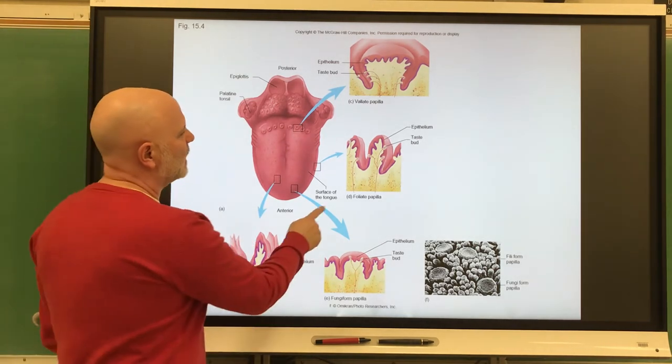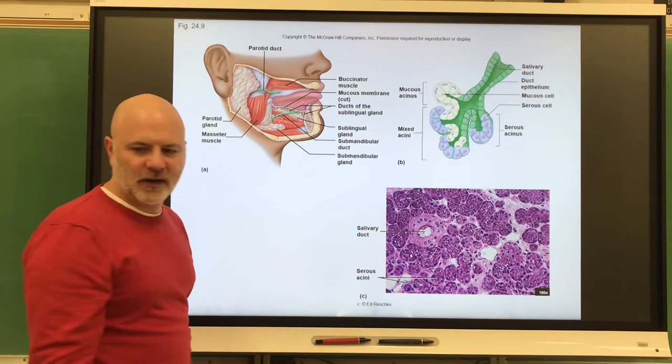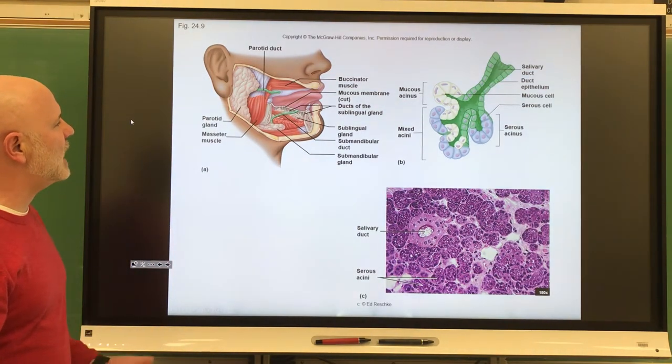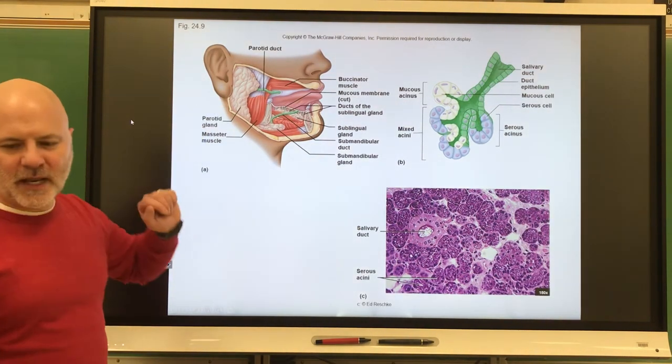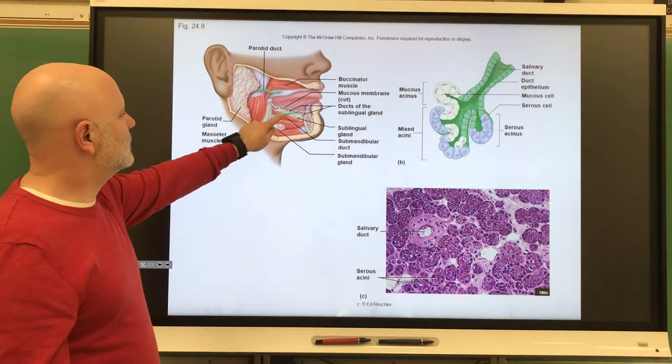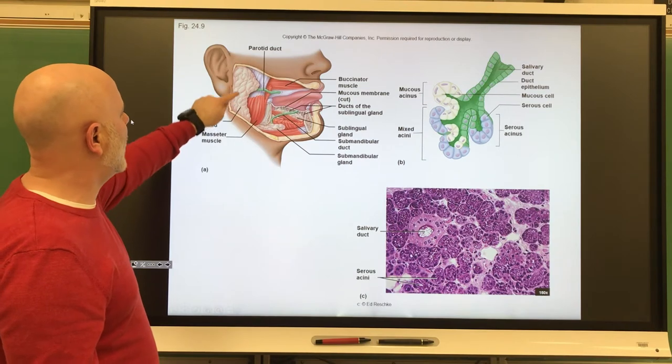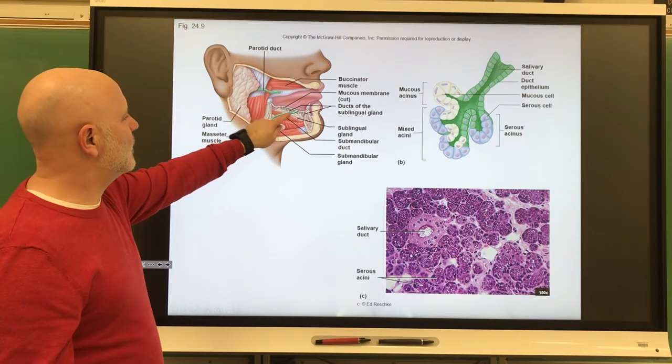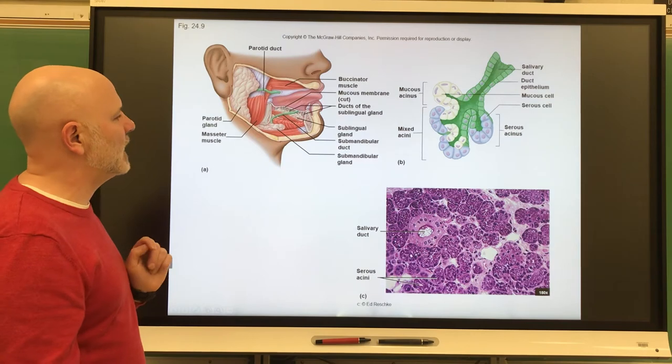Next are the salivary glands. So if we move to the salivary glands here, these are glands that secrete saliva. We have a few of these salivary glands. So we have the parotid glands here. We have the sublingual and then the submandibular.